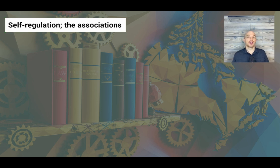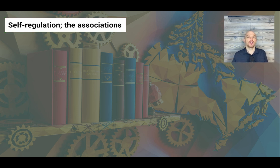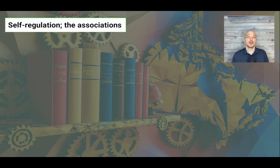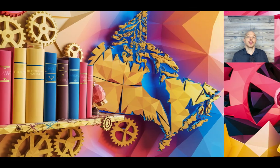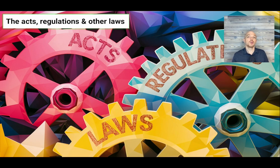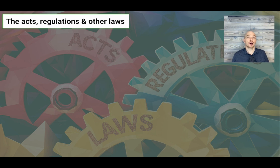While they cannot directly govern non-members, they can initiate legal action, including court proceedings, to enforce compliance. These associations oversee engineering and geoscience activities within their province or territory. Engineers working outside their licensed area must obtain the necessary license or permit for the new region or collaborate with a licensed company. The Acts, regulations, and other laws help to guide member behavior and establish the operation of the body or association.